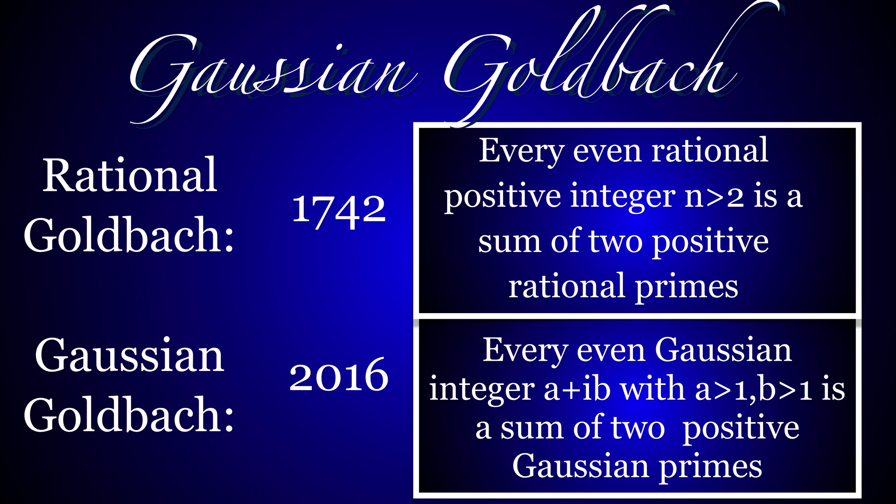In this context there are other conjectures. Last spring I read Barry Mazur and William Stein's booklet on primes. In one exercise they asked to come up with new conjectures. So that's what I did last summer. My conjecture is that every Gaussian integer a+ib with a and b bigger than 1 is a sum of two positive Gaussian primes. This is closer to the binary Goldbach conjecture, formulated in 1742.